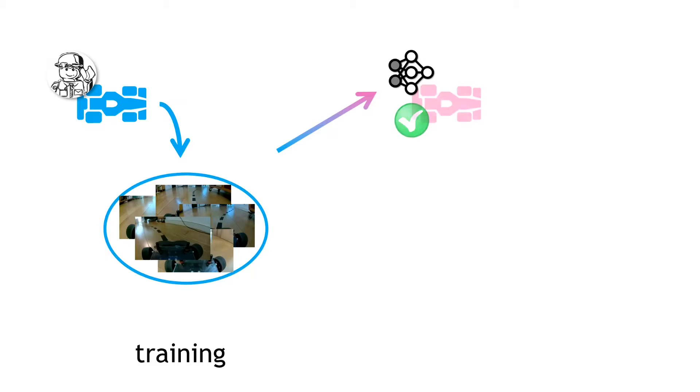However, when you upload the policy to the vehicle and send it off driving around the track by itself, it often doesn't do as well as expected. In fact, it often ends up parked against a wall somewhere.